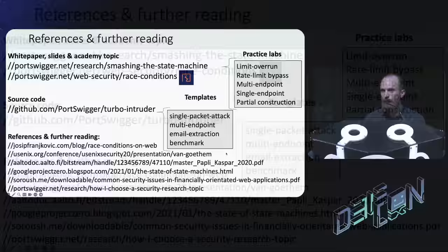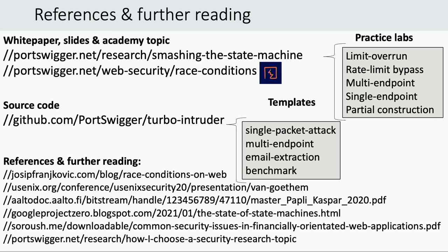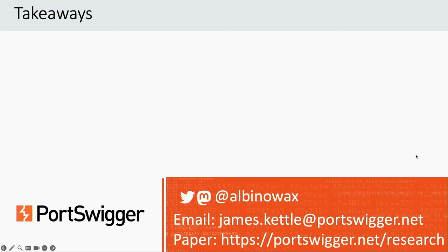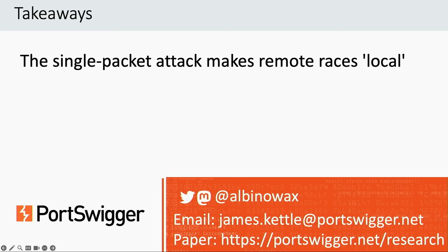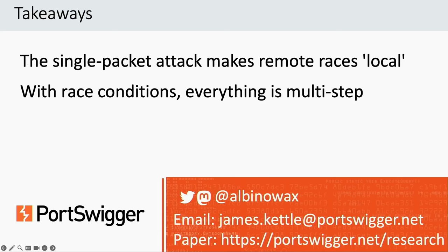There's a lot of further reading available. The three key things I'd suggest: check out the white paper — that's basically the written-up version of this presentation with a little bit of extra info. Have a practice on our online labs, because there's no substitute for real experience with these vulnerabilities. And grab my code to take the single packet attack and find some real vulnerabilities in the wild. The three key takeaways are: the single packet attack makes remote race conditions local; with race conditions, everything is potentially multi-step; and to find these bugs, predict, probe, and prove. I'll take five minutes of questions now — if you have any more, just come chat to me out the back or send me an email. Thank you for listening.